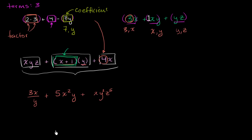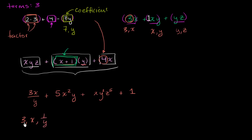Now let's look at the next example. I'm going to add a term to make it four terms total. The first term is interesting because it involves division by y. Remember, dividing by y is the same thing as multiplying by its reciprocal. So this term would usually be considered to have three factors: three, x, and one-over-y — because three times x times one-over-y gives you exactly what's written. So you'd say this has three factors, and the coefficient is three.